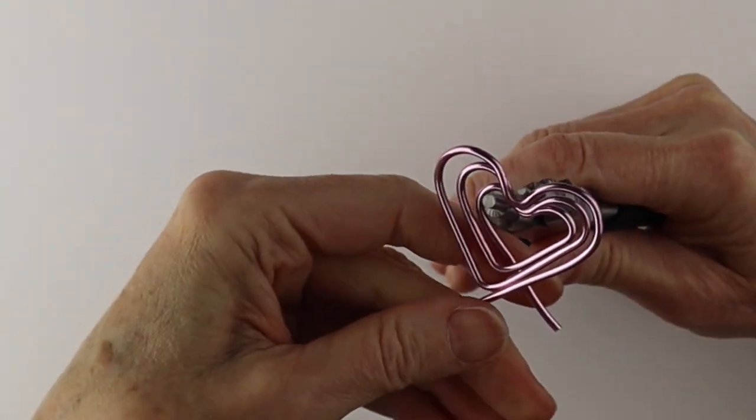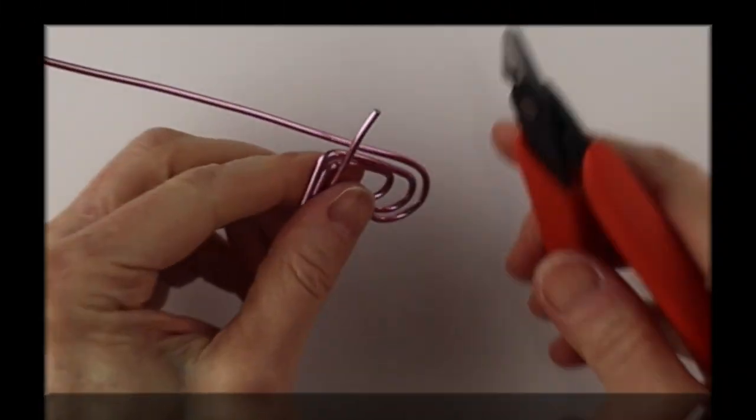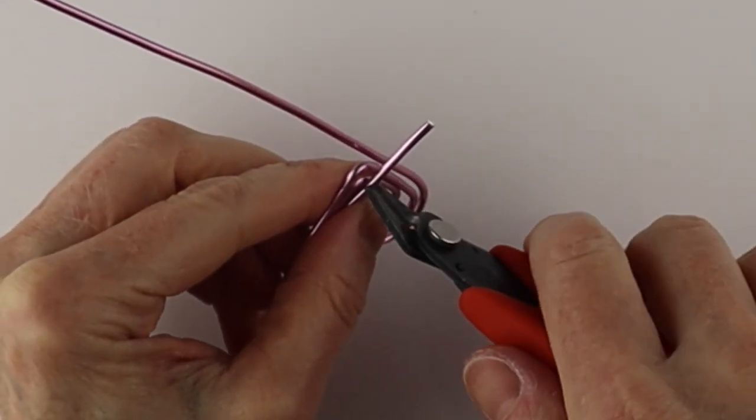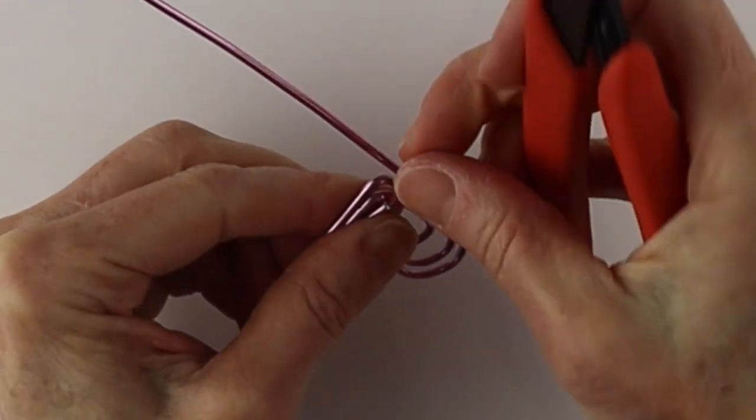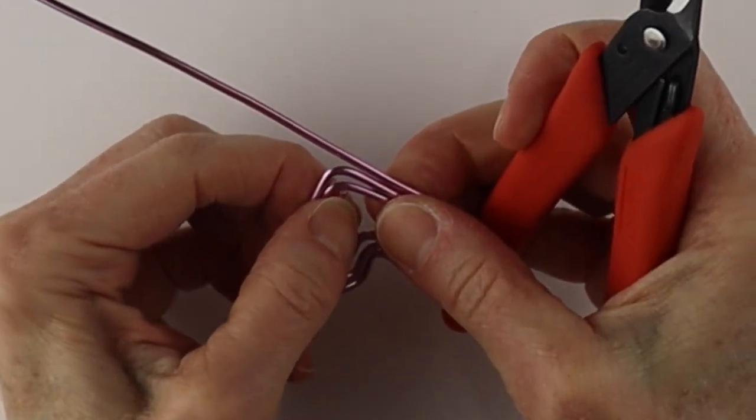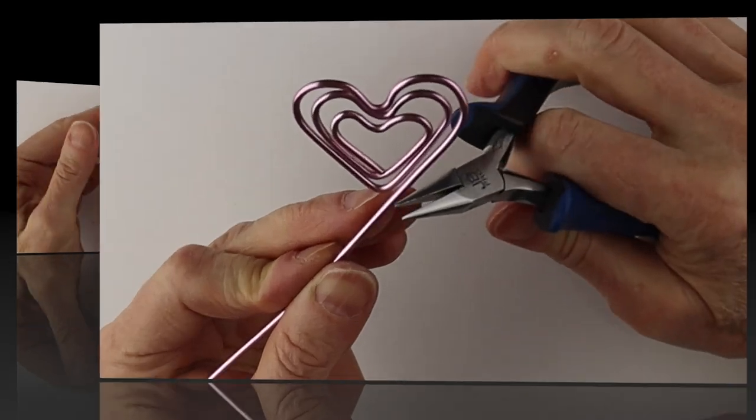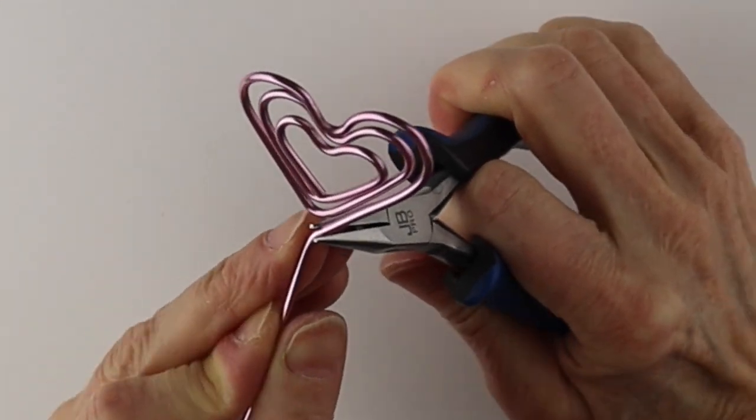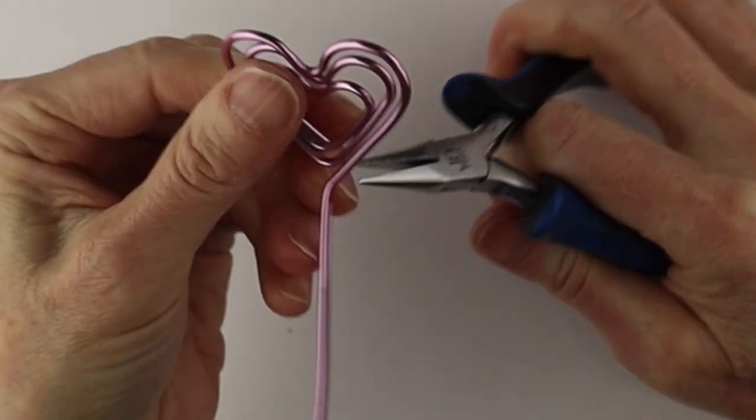So that's our last heart and then you're going to clip the end flush. Remove that and then push it right in there so it sits inside. Now take your flat pliers and bend it straight down.